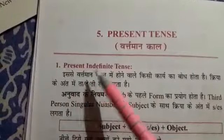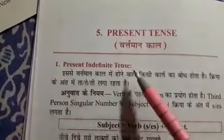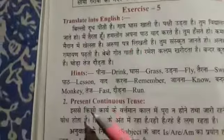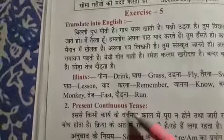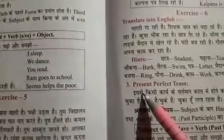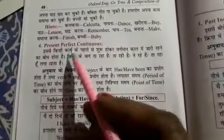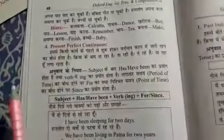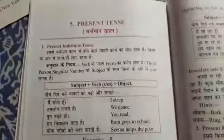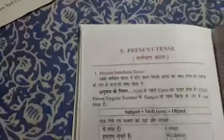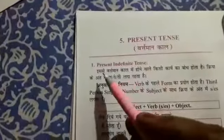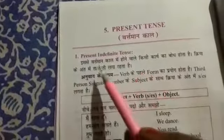First, present indefinite tense. Second, present continuous tense. Third, present perfect tense. And fourth, present perfect continuous tense. Today we will read present indefinite tense.